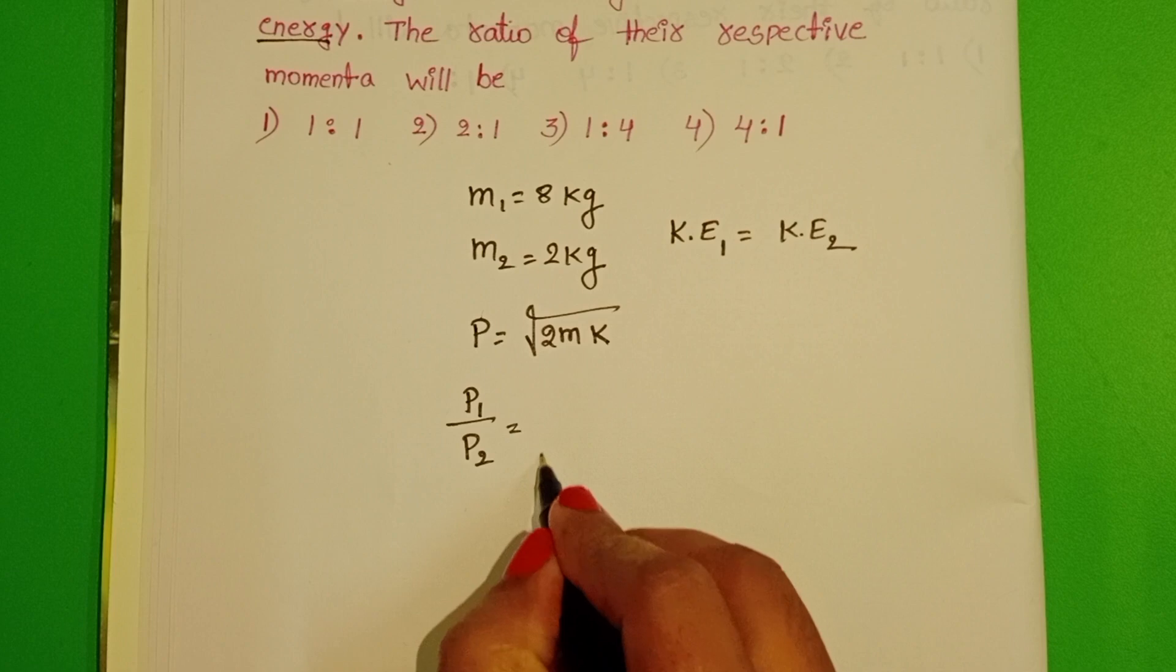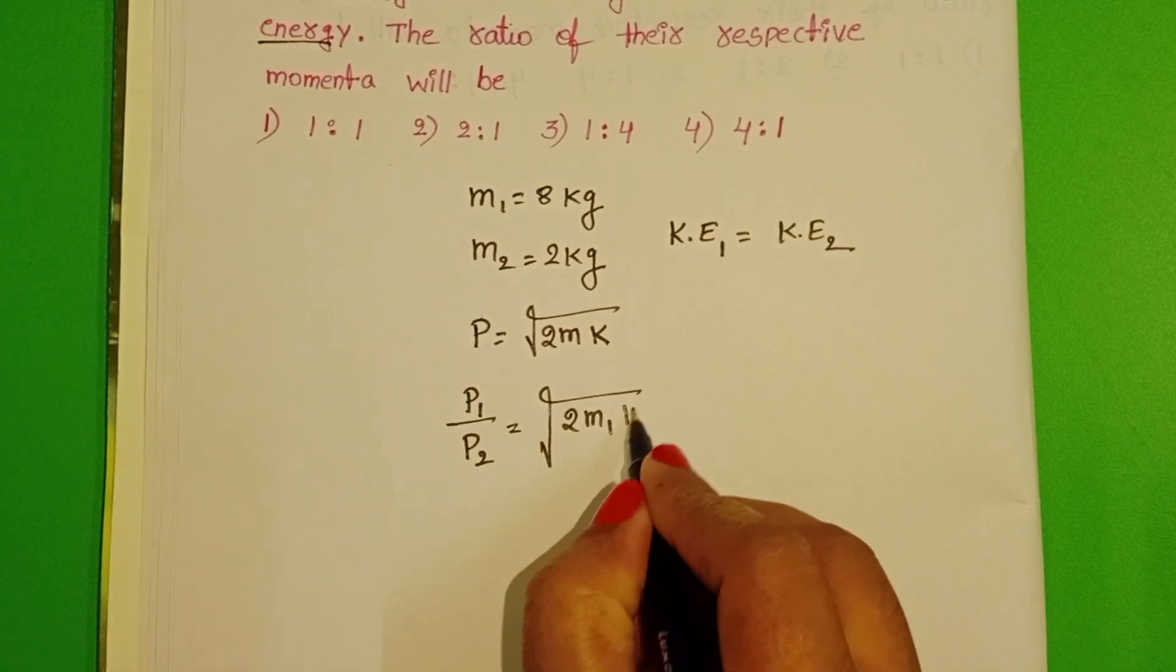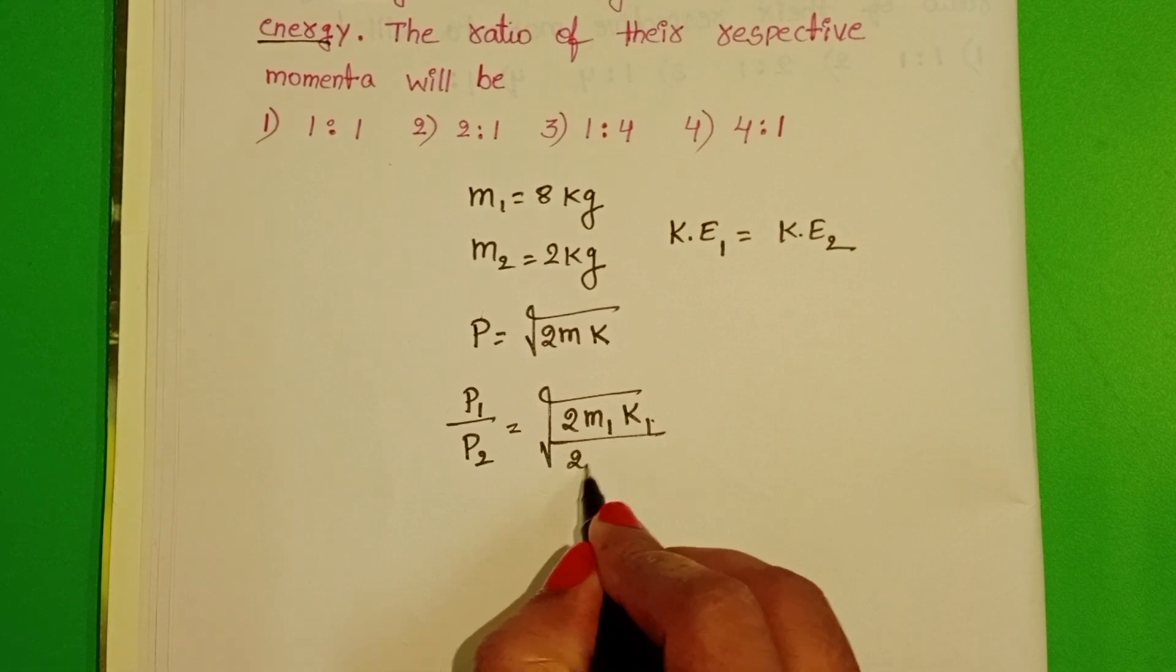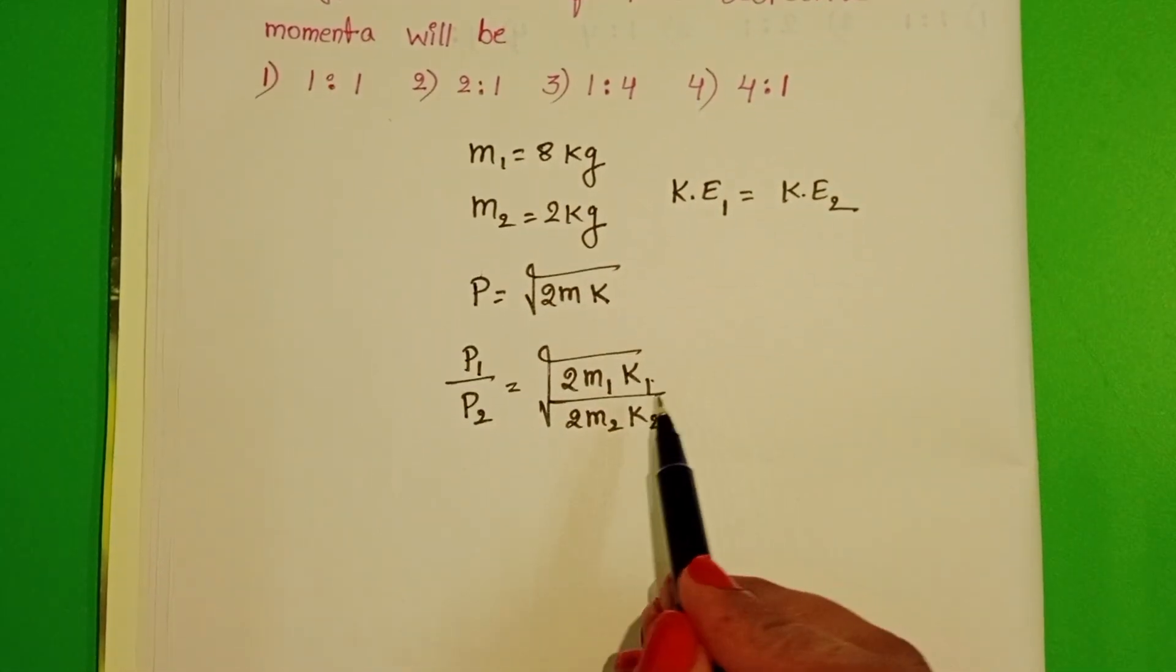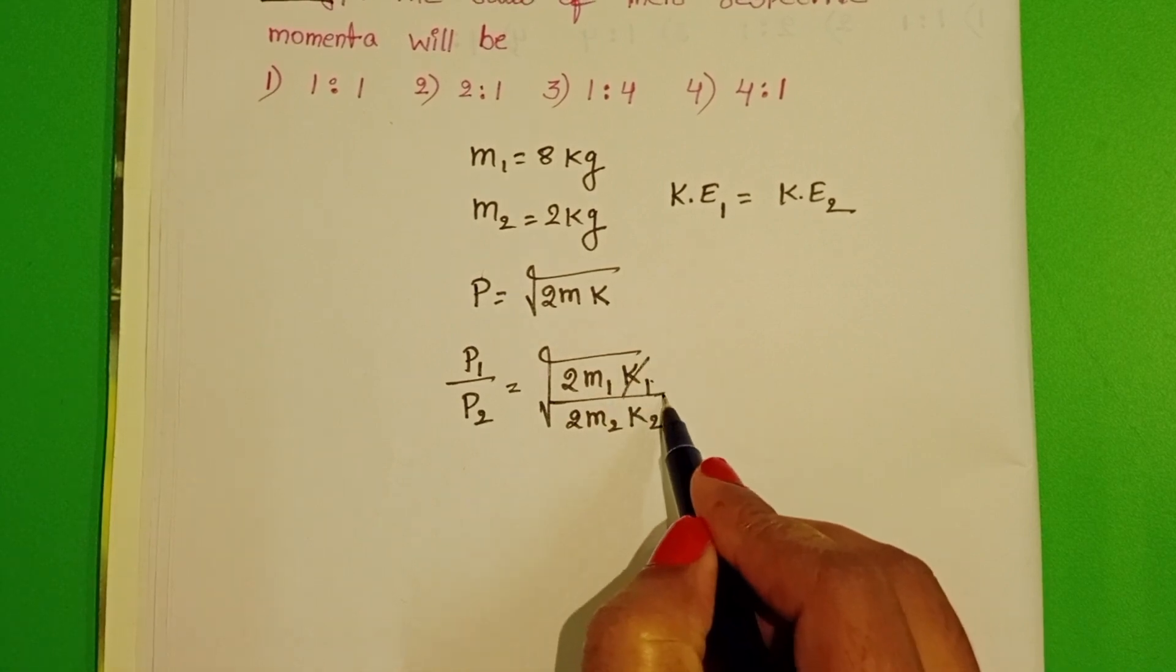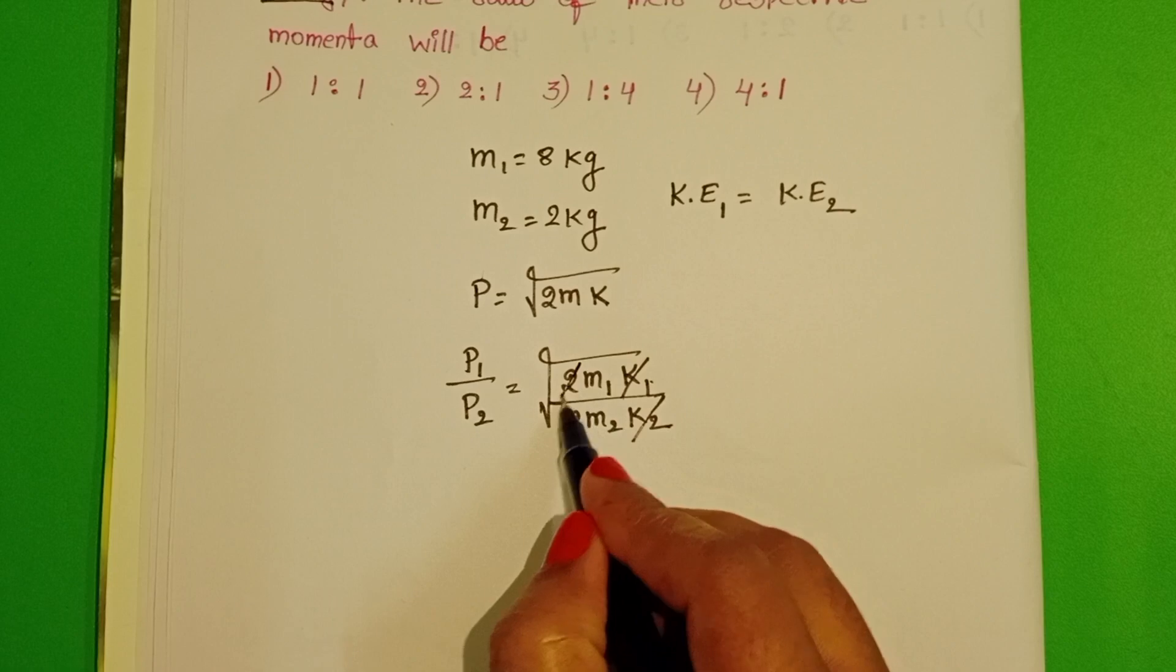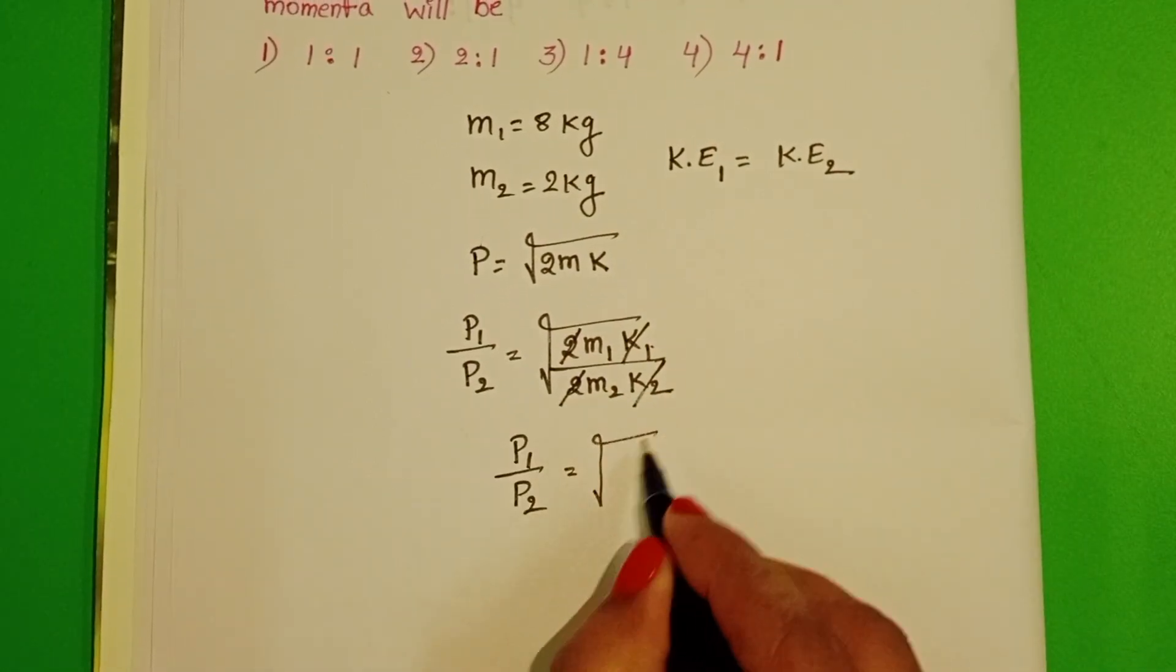by P₂ equals square root of (2m₁K₁)/(2m₂K₂). Kinetic energy of the first body equals the second body, so K₁ and K₂ get cancelled, 2 also gets cancelled. Then the ratio of their momenta is